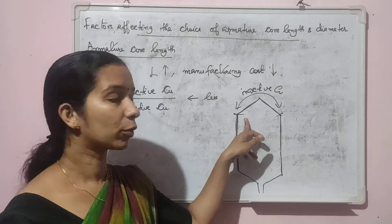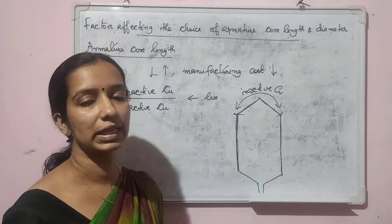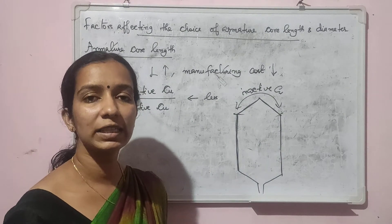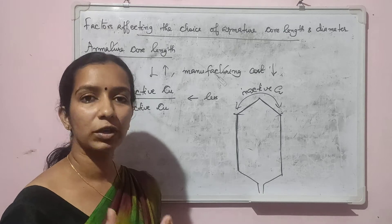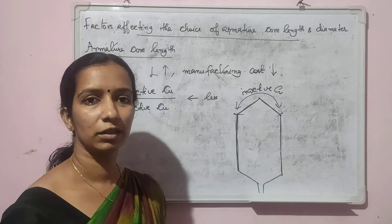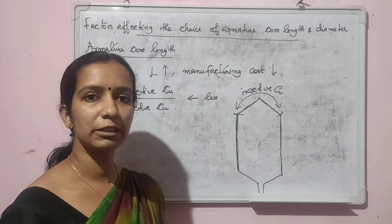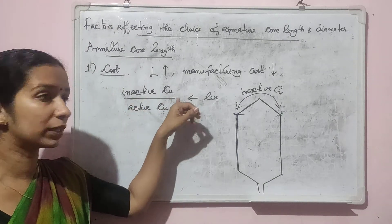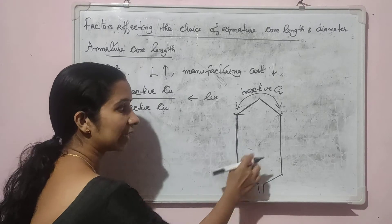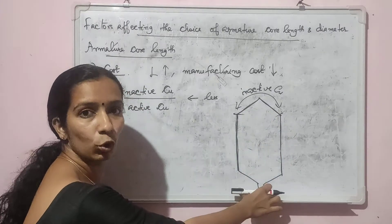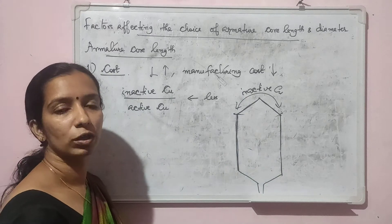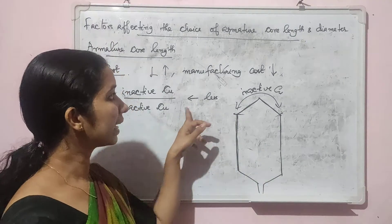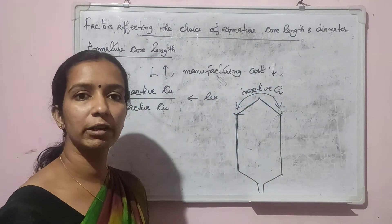The inactive copper is just for providing the end connection between the two coil sides. As this portion does not take part in EMF production, it is desirable to reduce the amount of inactive copper — if inactive copper is less, the machine will be cheaper. In a machine with a larger core length, the ratio of inactive copper to active copper will be less, and hence the machine will be cheaper with lower manufacturing cost.